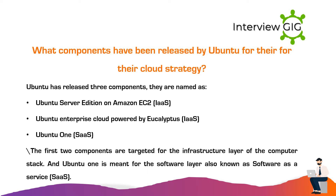What components have been released by Ubuntu for their cloud strategy? Ubuntu has released three components: Ubuntu Server Edition on Amazon EC2 (IaaS), Ubuntu Enterprise Cloud powered by Eucalyptus (IaaS), and Ubuntu One (SaaS). The first two components are targeted for the infrastructure layer of the computer stack, and Ubuntu One is meant for the software layer, also known as software as a service.